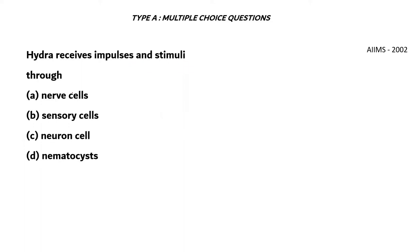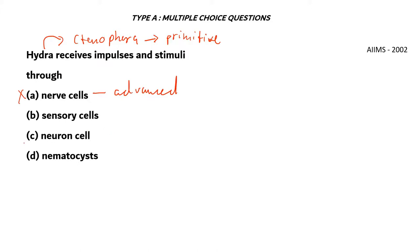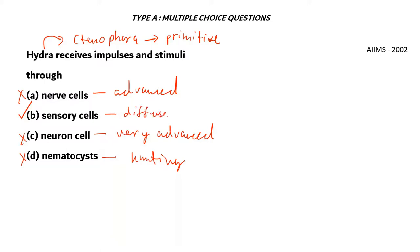Next question. Hydra receives impulses and stimuli through: A. nerve cells, B. sensory cells, C. neuron cell, D. nematocysts. Hydra belongs to Coelenterata, which are primitive organisms with a primitive nervous system. Option A, nerve cells, is incorrect — these are found in advanced creatures. Option C, neuron cell, is also incorrect — found in very advanced creatures such as humans. Option D, nematocysts, are used for hunting, not stimuli. The right answer is option B, sensory cells, which form part of the diffused nervous system in organisms such as hydra.